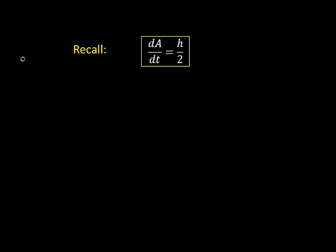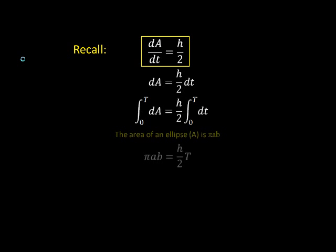Recall from the second law proof that the derivative of area with respect to time was h over 2. We can rearrange this to get dA is equal to h over 2 times dt. Upon integrating this from 0 to T, a capital T which is the period, we can get pi AB is equal to h over 2 times T. Rearranging this, we can get 2 pi AB over h is equal to T. This is based on the fact that the area of an ellipse is equal to pi AB. When you integrate dA from 0 to T, you get the fully enclosed area of the ellipse.